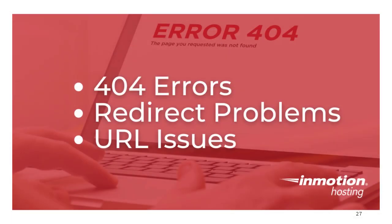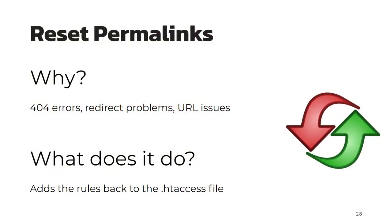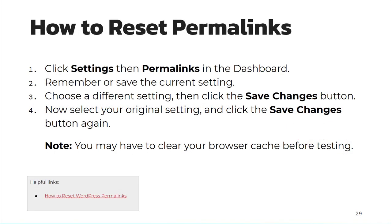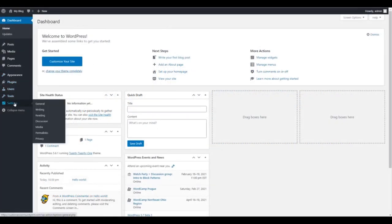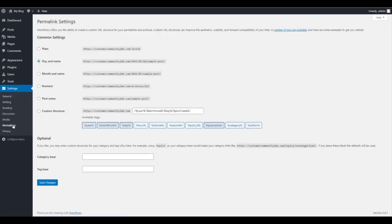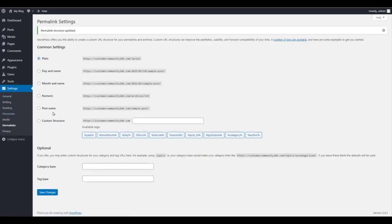If you're getting 404 errors, redirect problems, or URL issues, there are a few things we can check. The first thing I would try is resetting permalinks — this will add the default rules back to your .htaccess file. To reset your permalinks, you essentially just select a different setting and save, then put your settings back and save again. Keep in mind you may have to clear your browser cache before testing.